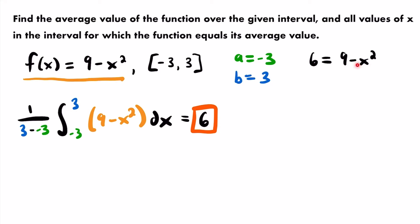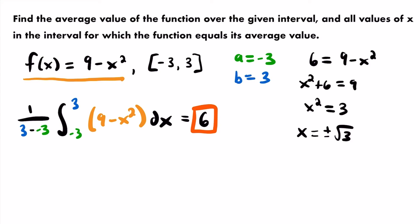Setting 6 equal to 9 minus x squared: add x squared to both sides to get x squared plus 6 equals 9, then subtract 6 from both sides to get x squared equals 3. Taking the square root of both sides gives x equals plus or minus the square root of 3, accounting for both the positive and negative roots.